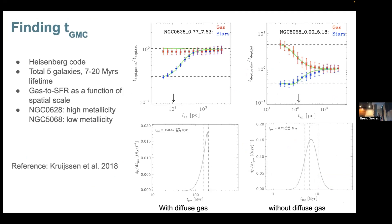The method that we used is called Heisenberg code. Basically it's a code that is designed to fit the observational data to find the time scale. You take the map of the observational data, convolve them, and use a parameter space to find the best fit. Our group tried five galaxies which has lifetime between 7 to 20 million years.